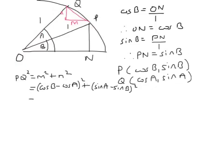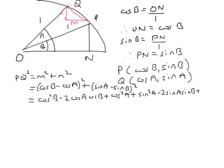So let's expand those brackets. Cos B minus cos A, all squared. So that's cos squared B minus 2 cos A cos B plus cos squared A. Let's expand the second bracket. We've got sine squared A minus 2 sine A sine B plus sine squared B.